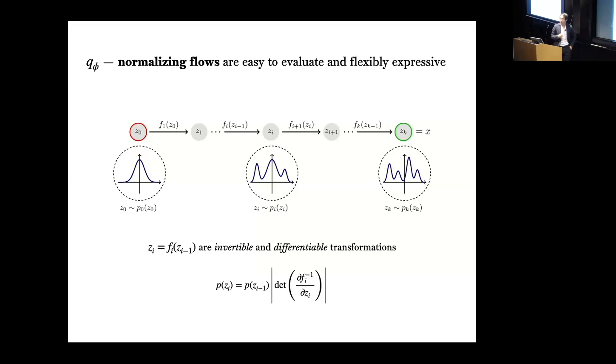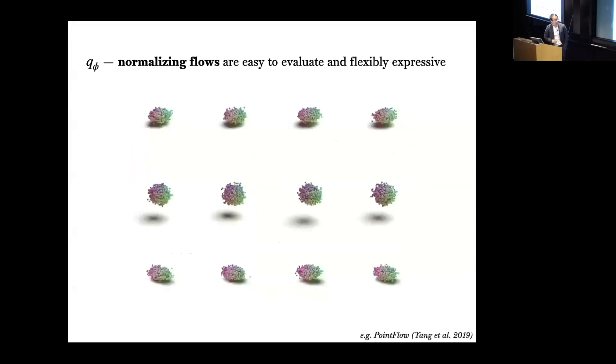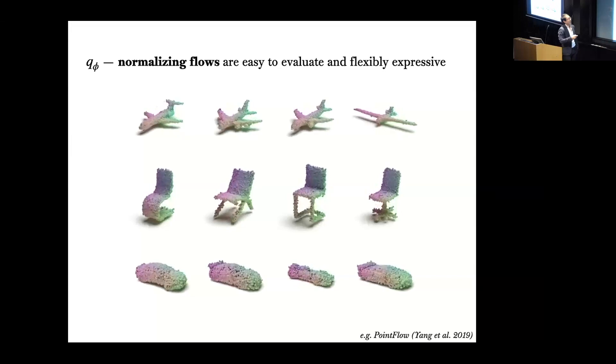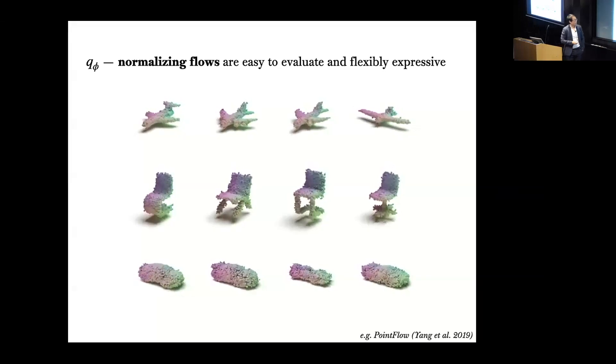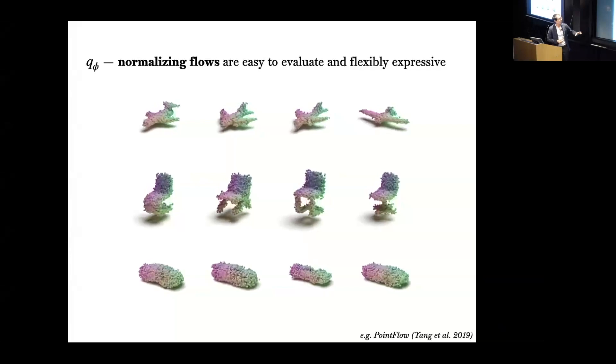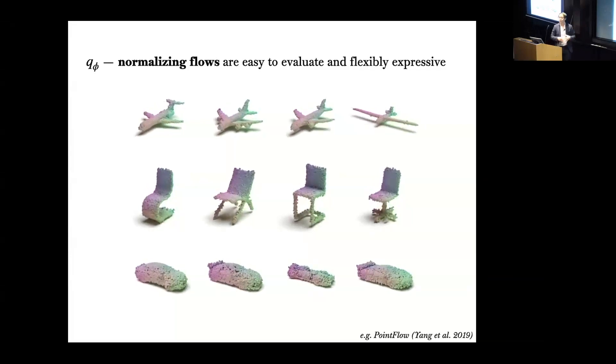Normalizing flows has been mentioned throughout this conference but this is the model that we use. It provides both, it's both easy to evaluate and also very flexible. I'm not going to go into any detail other than saying that it's a series of invertible and differentiable transformations from some base distribution to some complicated target distribution. I'll just give you a demonstration of how flexible it is. Here's a 3D point cloud which with a normalizing flow you can transform into airplanes, chairs, or cars. This is just to make the point that it's very very flexible and can describe complicated probability distributions.